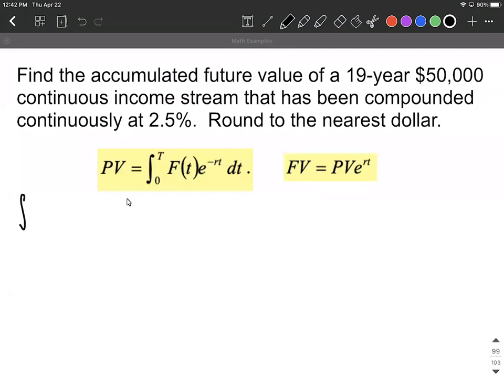So let's see if we can set this up. We're looking at an integral between 0 and 19, it's 19 years in the future. Then our function, it's a constant function, 50,000, is going to go in for F(t), multiplied by e raised to the negative 0.025t. And yes, I did switch from a percent over into a decimal as I expressed our rate. Then this is dt.